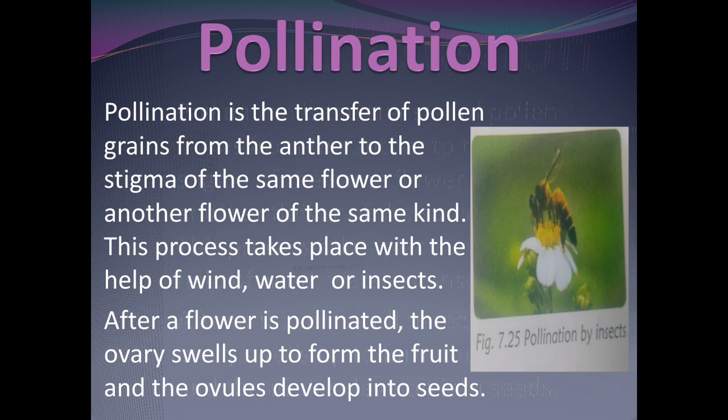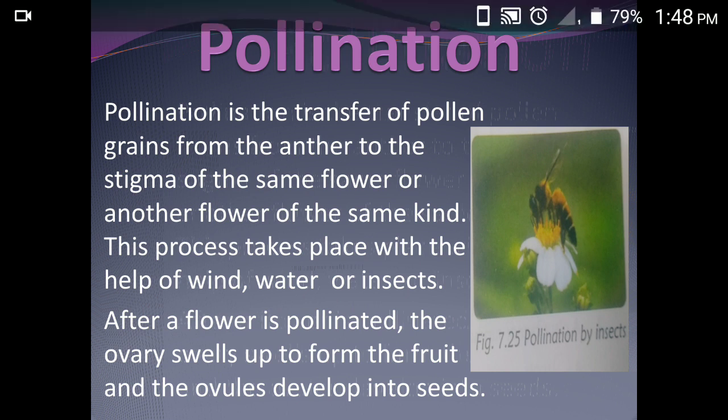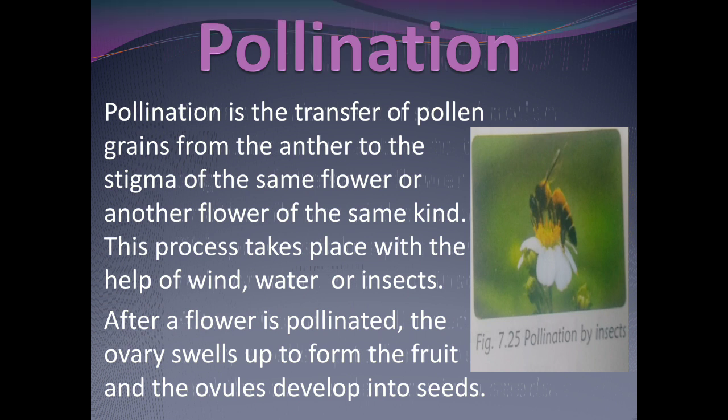In the picture you can see pollination by insects. Insects take pollen grains from one flower to another. After a flower is pollinated, the ovary swells up to form the fruit and the ovules develop into seeds.